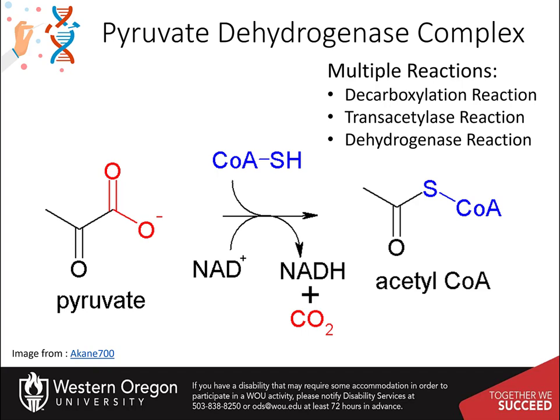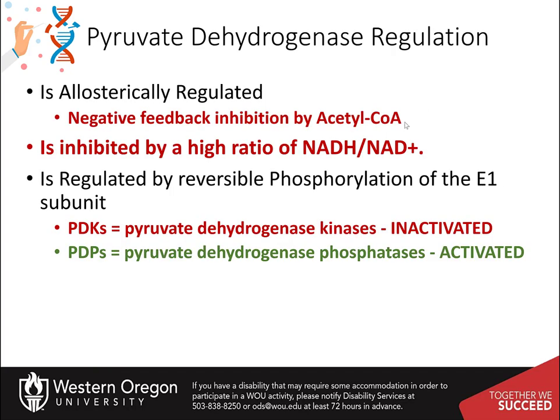The pyruvate dehydrogenase complex is also a key regulatory element in the pathway linking glycolysis to the Krebs cycle. Acetyl-CoA will inhibit the enzyme reaction by negative feedback inhibition. Similarly, a high ratio of NADH to NAD will indicate that there is not enough NAD to serve as a cofactor for the enzyme to receive electrons housed on FAD. Without being able to offload the electrons from the system, the system will get backed up and shut down until electron carrier molecules are oxidized and available to accept electrons from the E3 subunit.